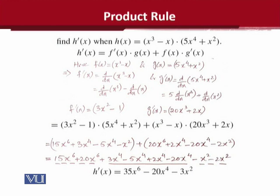Finding f of x is possible for you because you know the basic rules of differentiation. The power rule is applied and then f bar of x is obtained, and g bar of x is also obtained. We noted these down and put them into the rule: f bar of x times g of x plus f of x times g bar of x. All values are substituted and then simplification follows.